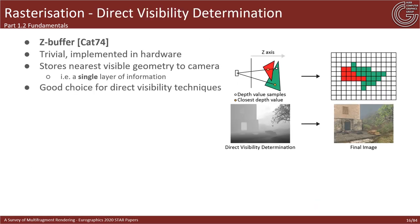The most popular algorithm for primary visibility determination is the z-buffer, efficiently implemented in commodity graphics hardware. After processing all fragments, the z-buffer stores the nearest visible fragment with respect to the camera location — in other words, it stores a single layer of information. Therefore, it is an excellent choice for real-time techniques that require access to direct visibility information.